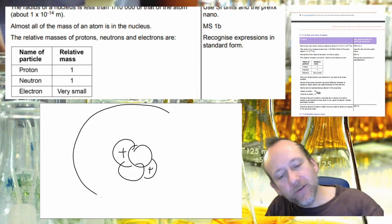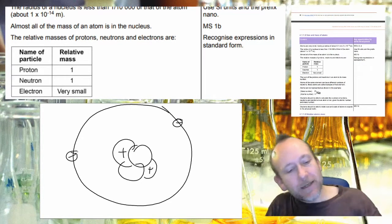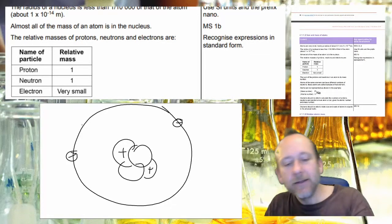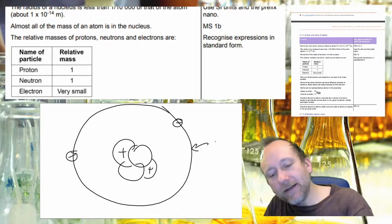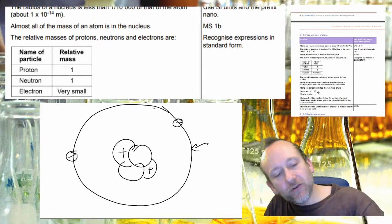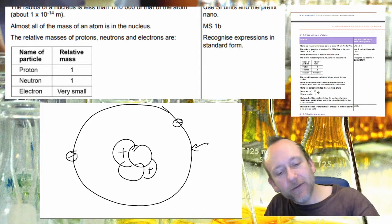And then you've got electrons around the outside and again this is not a hard shell, this shell is not a hard surface it's just it describes the orbit.